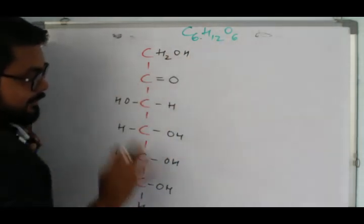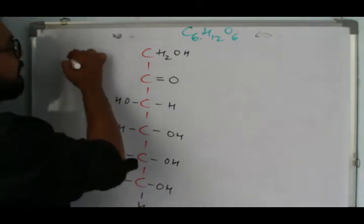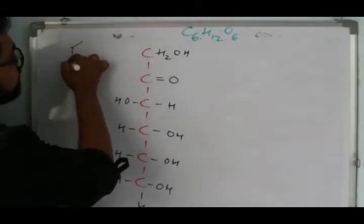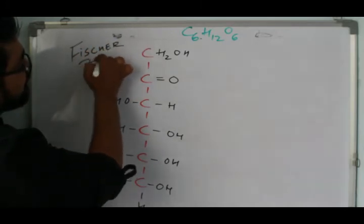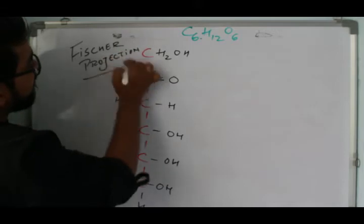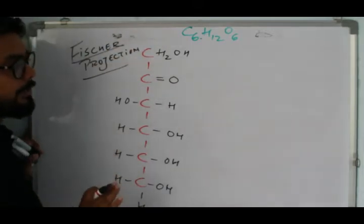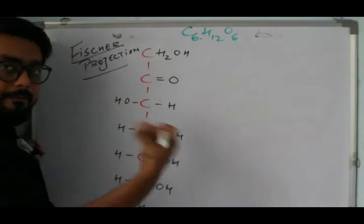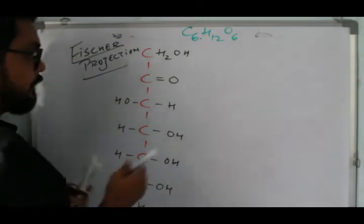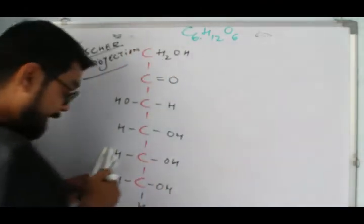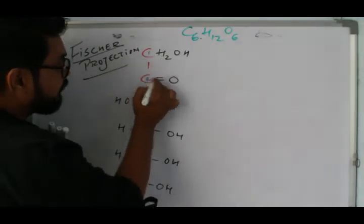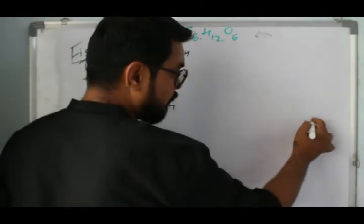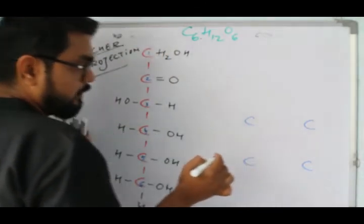This is the structure of fructose — this is the Fischer projection. Now I need to convert this Fischer projection into the Haworth projection. The pattern for fructose is going to be a bit different from what we drew for glucose. The numbering is very important: one, two, three, four, five, and six.